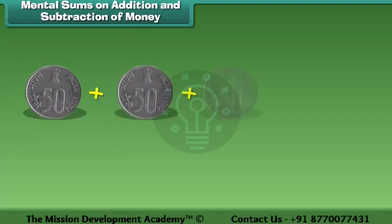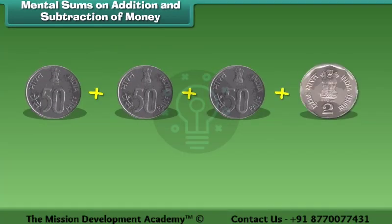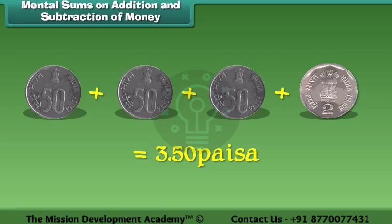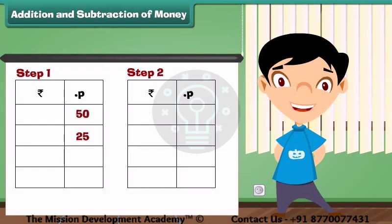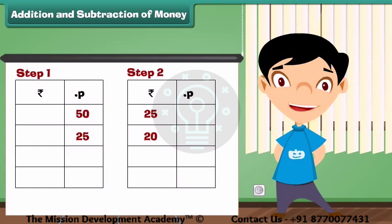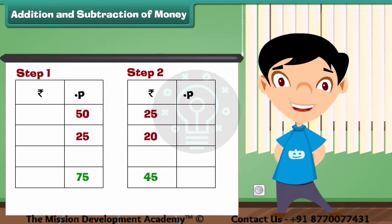Now I have 3 fifty-paise coins and a 2 rupee coin, which is equal to 3 rupees 50 paise. Let us learn how to add 25 rupees 50 paise and 20 rupees 25 paise. Step 1: Add the numbers in the paise column — 50 plus 25 is equal to 75 paise. Write 75 under the paise column. Step 2: Add the numbers in the rupees column — 25 plus 20 is equal to 45 rupees. Write 45 under the rupees column.